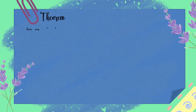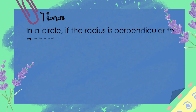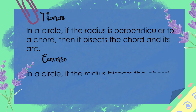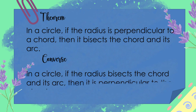Let's have the second theorem. In a circle, if the radius is perpendicular to a chord, then it bisects the chord and its arc. The converse: in a circle, if the radius bisects the chord and its arc, then it is perpendicular to the chord.